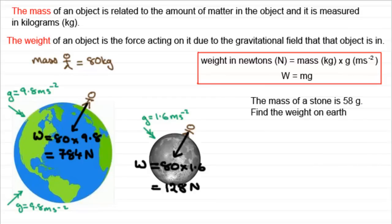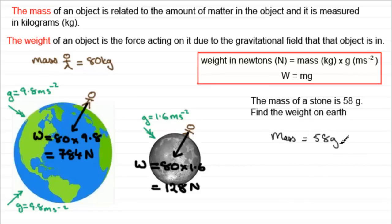Now suppose I had this question: the mass of a stone is 58 grams — don't confuse this 'g' with the g that we're using for acceleration due to gravity. Find the weight on earth. We've got to be very careful here, because first of all the mass is given in grams, 58 grams, and we need to change it into kilograms. We know that a thousand grams make a kilogram, so in kilograms this is going to be 0.058 kilograms.